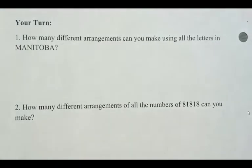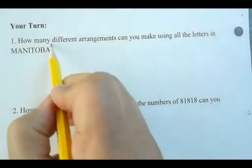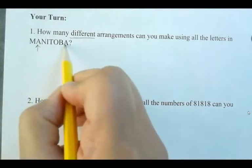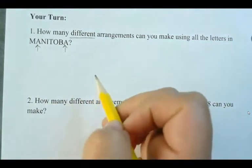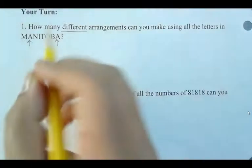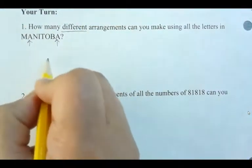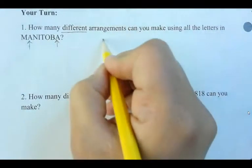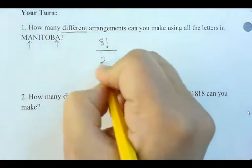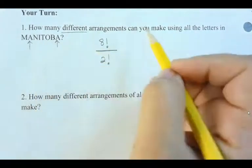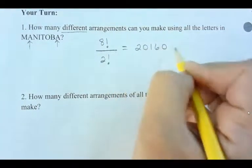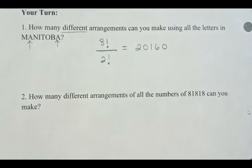Let's look at more examples. For the word MANITOBA, the first thing to identify is the repeating letter — the two A's. So we divide out a two factorial. There are eight letters total, giving eight factorial arrangements. Dividing by two factorial gives 20,160 different ways to arrange the letters of MANITOBA.